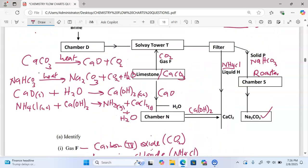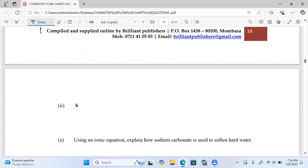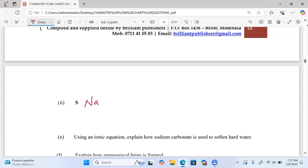Chamber S is the roaster. That is where the decomposition of sodium hydrogen carbonate takes place. When sodium hydrogen carbonate is heated, it gives us sodium carbonate solid, carbon dioxide gas, and of course water, which is a liquid. To balance the equation, we can simply write two behind sodium hydrogen carbonate.